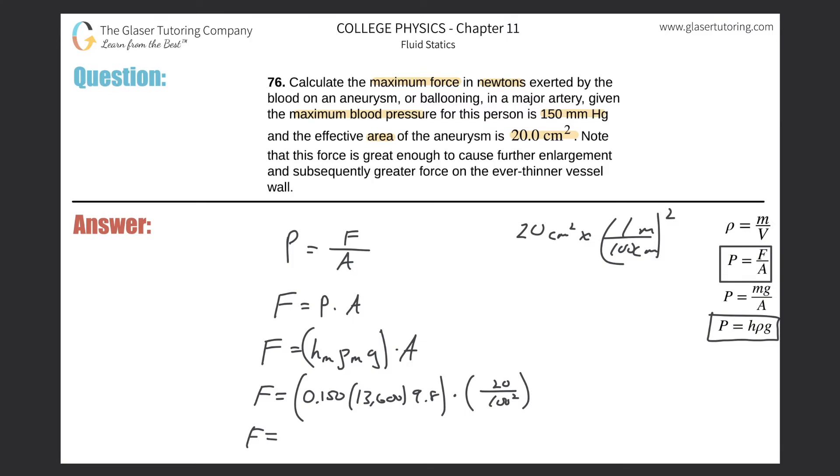So here's going to be the force: 0.15 times 13,600 times 9.8 times then 20 divided by 100 squared. Okay, so this is about 39.984 or so, so this is going to be about 40 newtons considering our rounding. So this would be the answer, this is the maximum force.